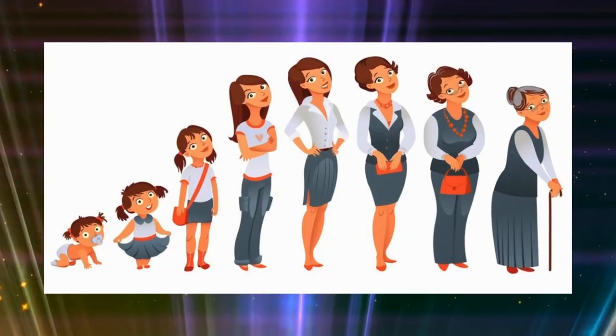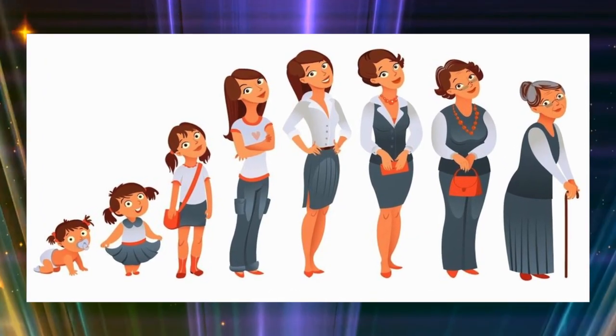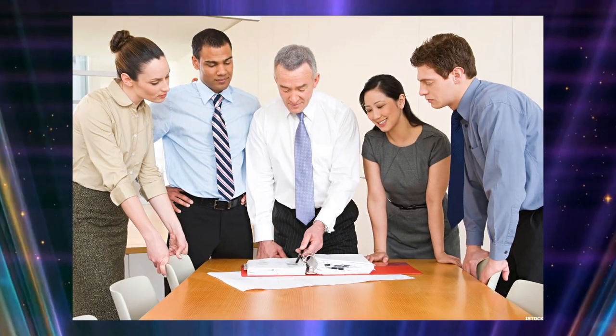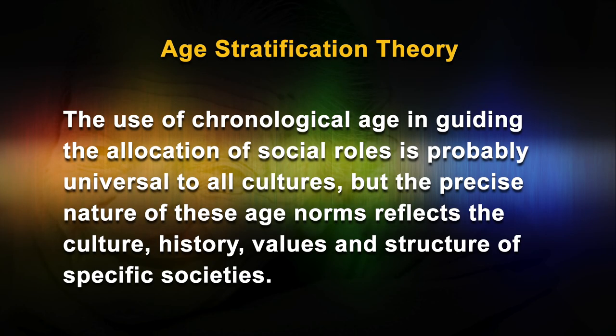This theory argues that each age group — young, middle life, and old — can be analyzed in terms of the role that members of that group play within society and how these are valued. For example, within the employment field, workers may be classified as older and younger, and the latter valued more highly because of their perceived greater productivity, innovation, and vitality. The use of chronological age in guiding the allocation of social roles is probably universal to all cultures, but the precise nature of these age norms reflects the culture, history, values, and structure of specific societies.